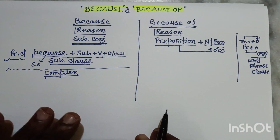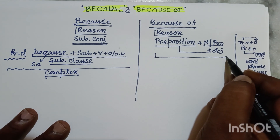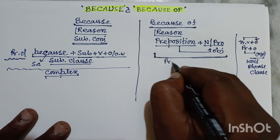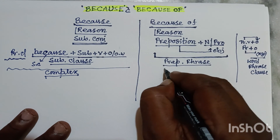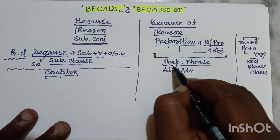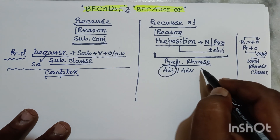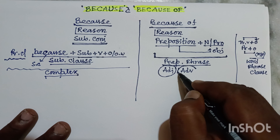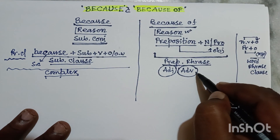This is the most important usage. So preposition plus noun will become a phrase — there will be more than one word, so it will be a phrase, and it will be called a prepositional phrase. Prepositional phrases act as adjective or adverb. If this prepositional phrase modifies a noun, it will be called an adjective. If it modifies a verb, adjective, or adverb, it will be called an adverb. And as it is used to show reason, obviously it will be an adverb.